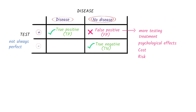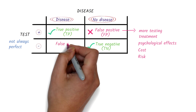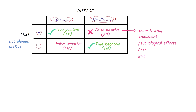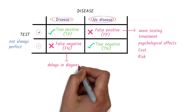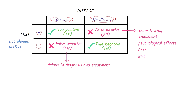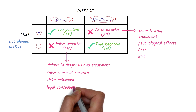On the other hand, a test can sometimes be negative even though the person has the disease. This is called a false negative. This is not ideal because the test has not picked up the person despite them having the disease. This may lead to delays in diagnosing the disease and, therefore, delays in treatment, which could lead to a negative health outcome. An incorrectly negative test may also lead to a false sense of security and the continuation of risky behaviors that may worsen the disease or even place others at risk in the case of a communicable disease. Missing a diagnosis may also have legal consequences.